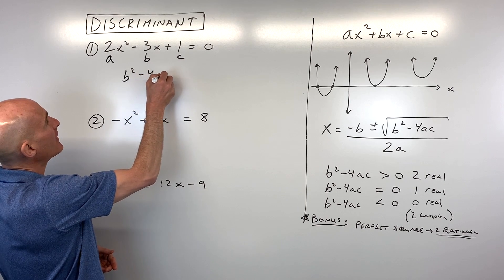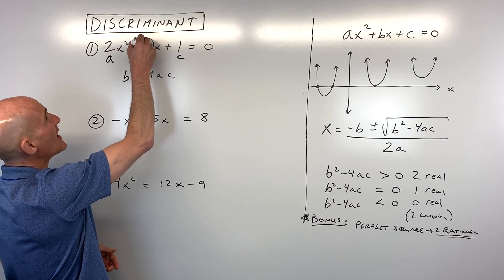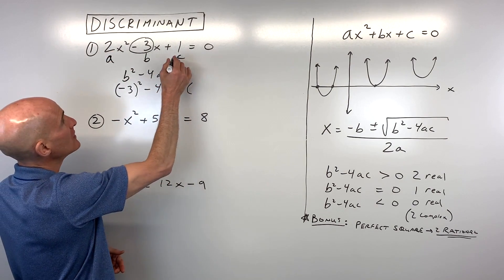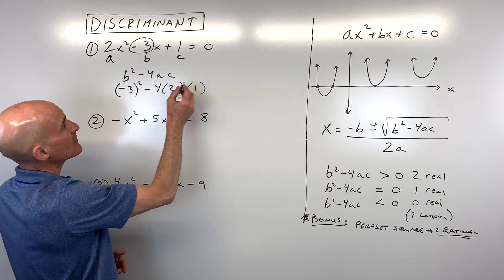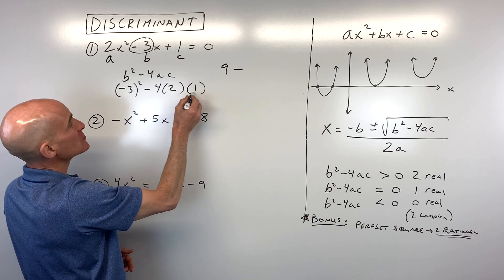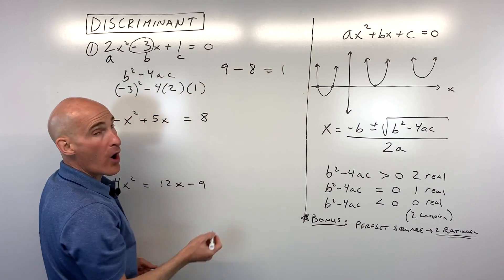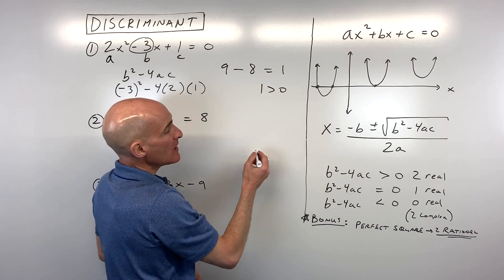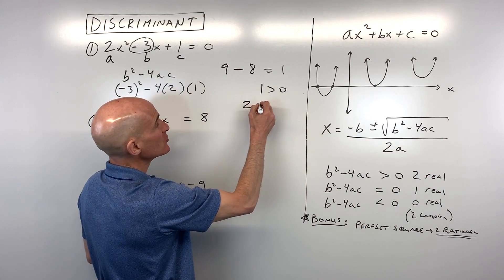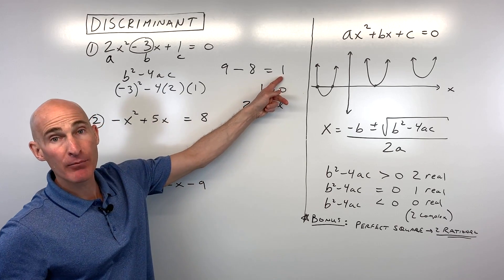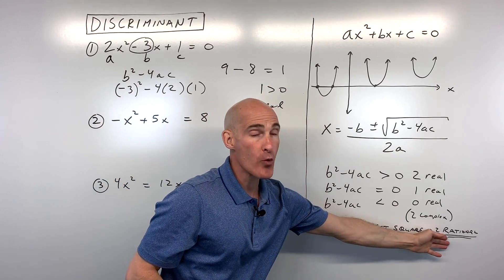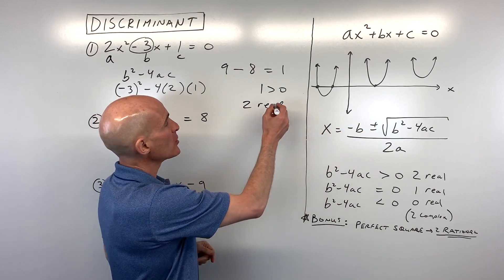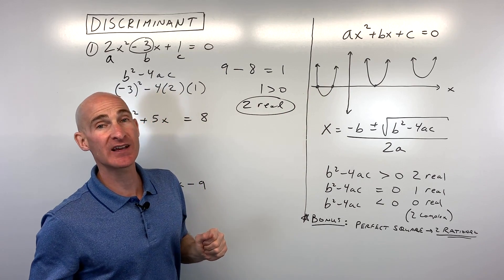So b squared minus 4ac: b is negative 3, so negative 3 squared, minus 4 times a, which is 2, times c, which is 1. Negative 3 squared is 9, minus 4 times 2 times 1, which is 8. So that comes out to 1. Now, the 1 doesn't mean there's one solution — it's positive, meaning greater than zero, so there are two real solutions. And because 1 is a perfect square, you're going to have two rational solutions. The parabola would cross the x-axis at two points.